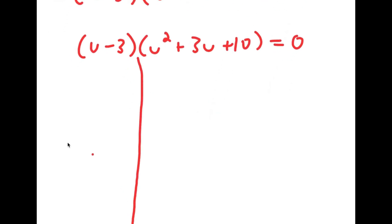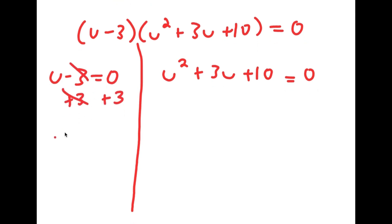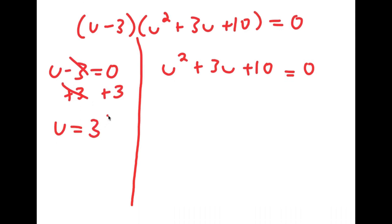This gives me two equations: u minus 3 equals 0, and u squared plus 3u plus 10 equals 0. For u minus 3 equals 0, all I have to do is add 3 on both sides, and I get u is equal to 3.